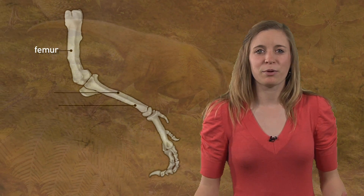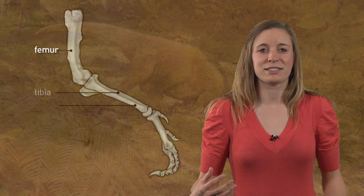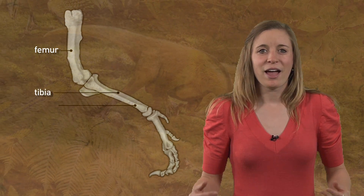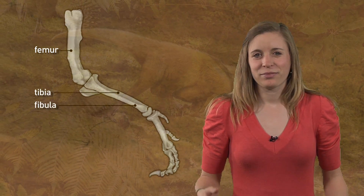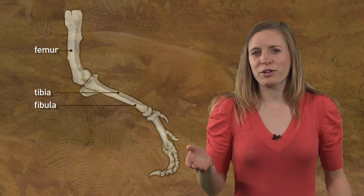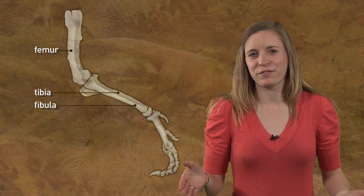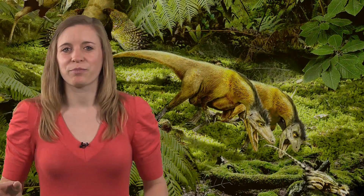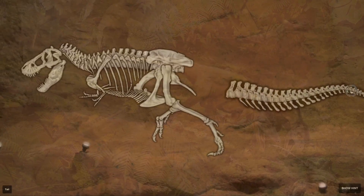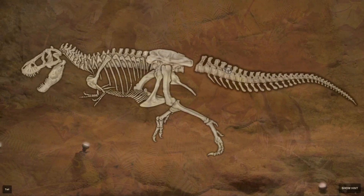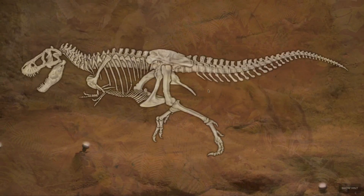The two lower leg bones are known as the tibia and fibula. If you've ever broken your leg, most likely you broke your fibula. When you leave this video, you'll be taken to an interactive puzzle. You're going to try and build a complete Tyrannosaurus skeleton. I'll see you soon.